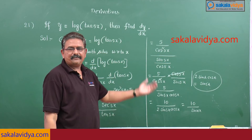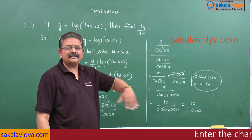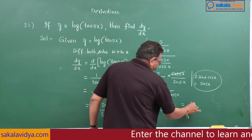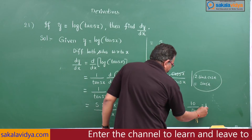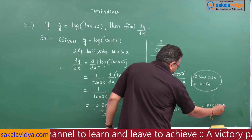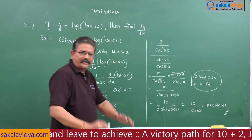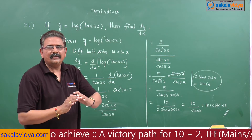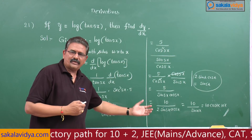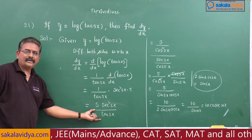What is the reciprocal of sin? That is cosecant. So 10 by sin 10x can be written as 10 cosecant 10x — this will be the final simplification. If you have the interest you can proceed further like this, otherwise you can stop the problem here.